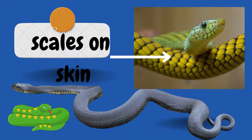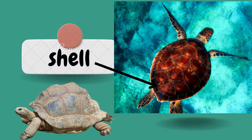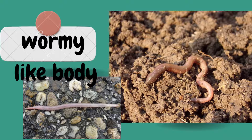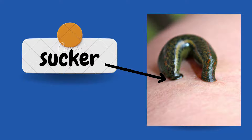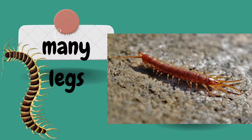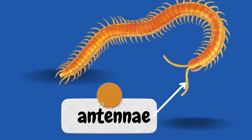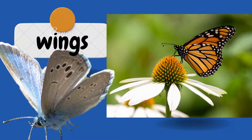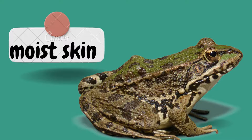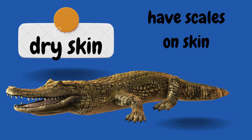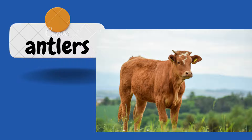Scales on skin, shell — turtles also have shells. Worm-like body shape, suckers in leech, many legs in centipede, antennae also present in centipede, wings in butterfly, moist skin of the frog, dry skin of crocodile and gecko.